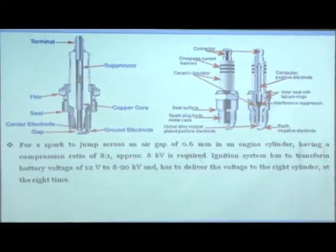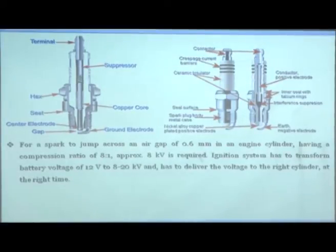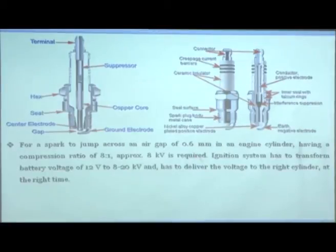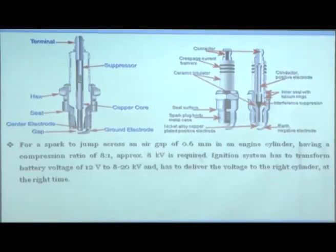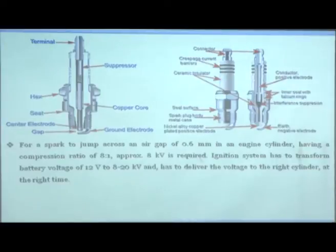For a spark to jump across an air gap of 0.5–0.7 mm in an engine cylinder with a compression ratio of 8:1, approximately 8 kilovolts (8,000 volts) is required. This is a relatively small engine with a small compression ratio. The 12 volts has to be converted to 8–20 kilovolts and delivered to the right cylinder at the right time, ensured by the distributor system.